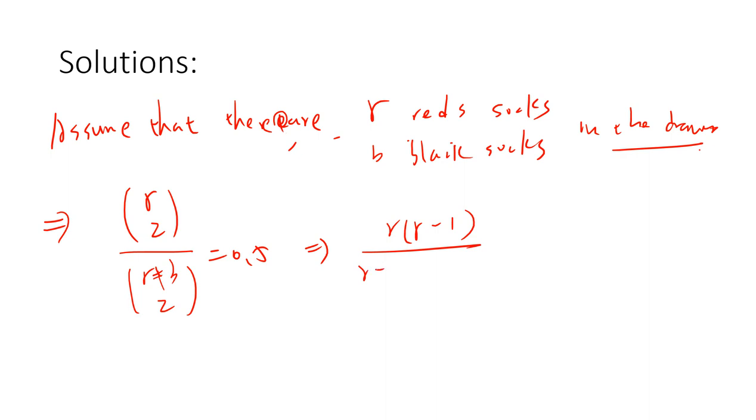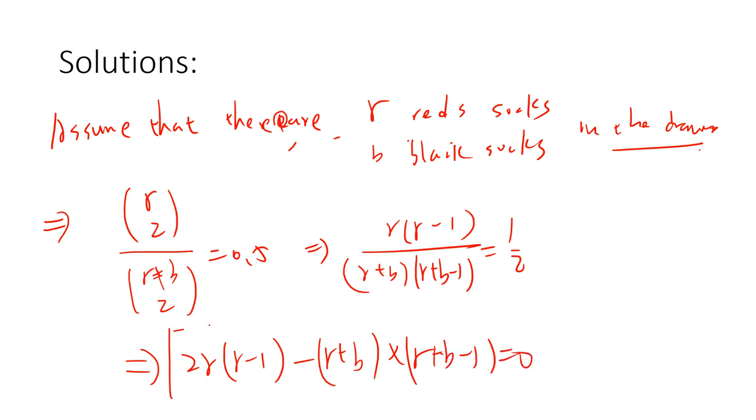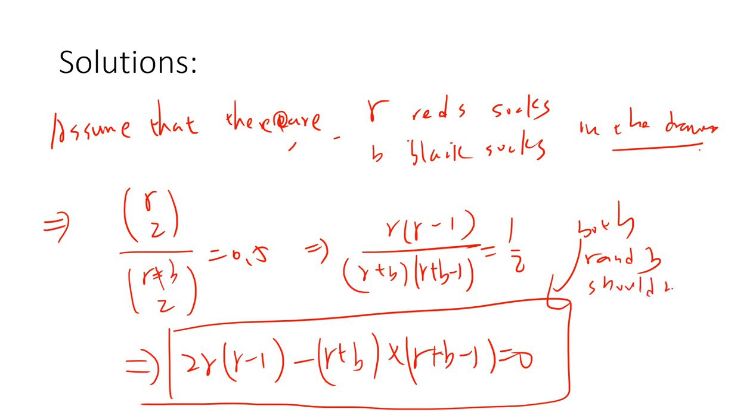So this satisfies 2 times r(r-1) minus (r+b)(r+b-1) equals 0. And then this equation is what we want to satisfy, and both r and b should be positive integers or natural numbers.